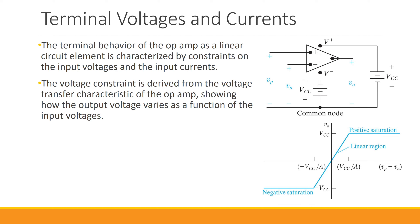Now that we have these reference polarities and reference directions, let's see how op-amps behave in general. The terminal behavior of the op-amp, which is a linear circuit element, can be characterized by two constraints — one on the input voltages and the other on the input currents. These are the two constraints we will figure out step by step, and we will use them for all circuits designed or analyzed in this course.